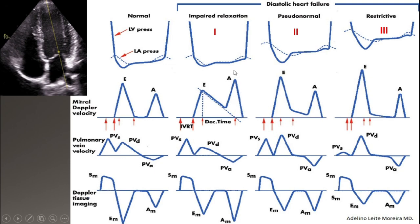In this phase of atrial contraction, pressure in the atrium goes higher than normal, but generally the mean left atrial pressure stays within the normal range and does not increase. That is why at this stage of diastolic dysfunction — called impaired relaxation — left atrial pressure will be normal.